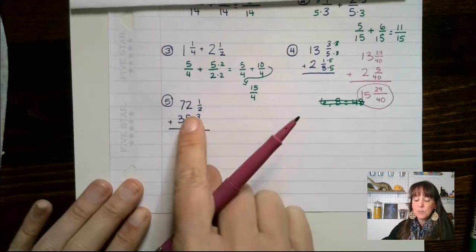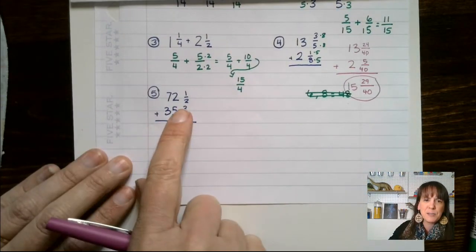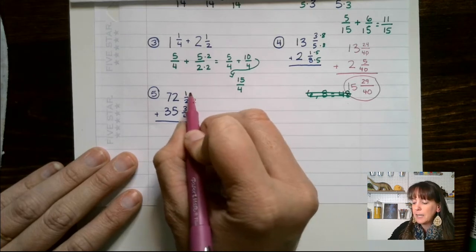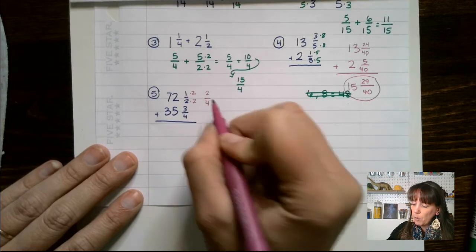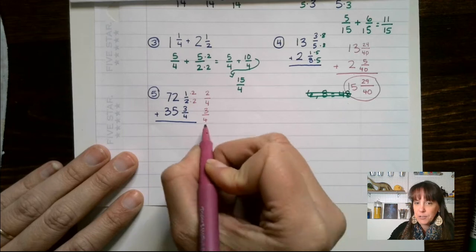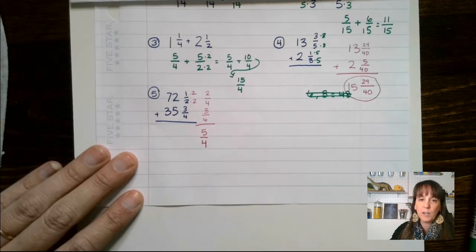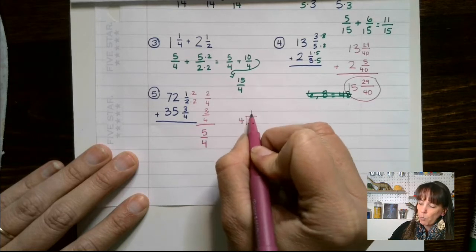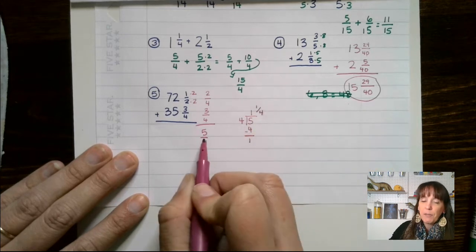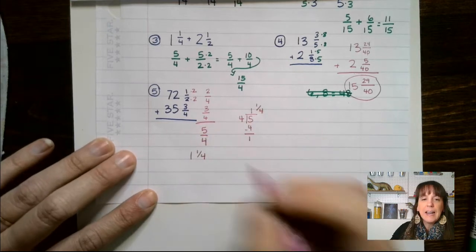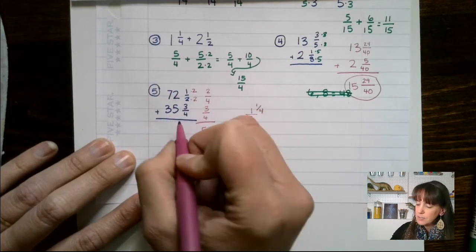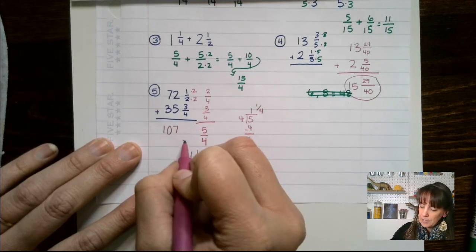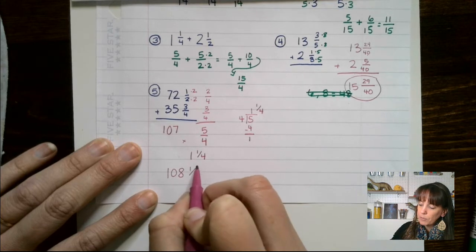Here's another example dealing with the fraction bits first. Denominators are 4 and 2, so our common denominator is 4. We get 2 over 4 and 3 over 4, which adds to 5 over 4. That's an improper fraction, so we do a little side work: 4 goes into 5 one time with a remainder of 1, so 5 over 4 is really 1 and 1 fourth. Now the whole numbers: 5, 6, 7 — so we have 7 there. Then 7 plus 3 is 10, and 100 plus this 1 and 1 fourth gives a final answer of 108 and 1 fourth.